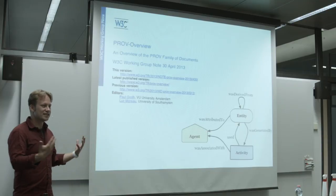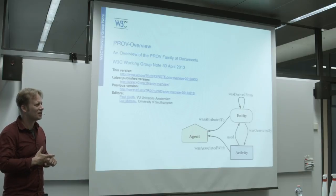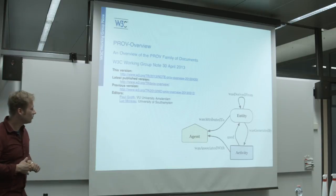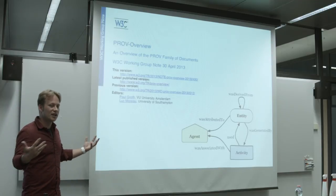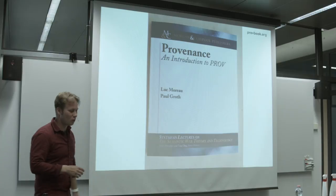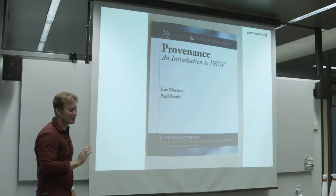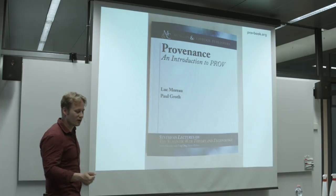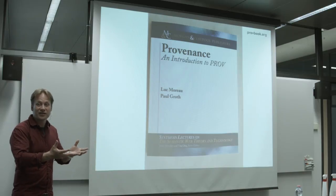This W3C PROV model tells us how to interchange the provenance of data — we can put it together and communicate it. PROV is a method and set of ontologies for describing the provenance of data. Once you describe it, you can tell people: we integrated your data together and we'll tell you where it comes from. There's also a book available on amazon.com for about $9 if you want more details.